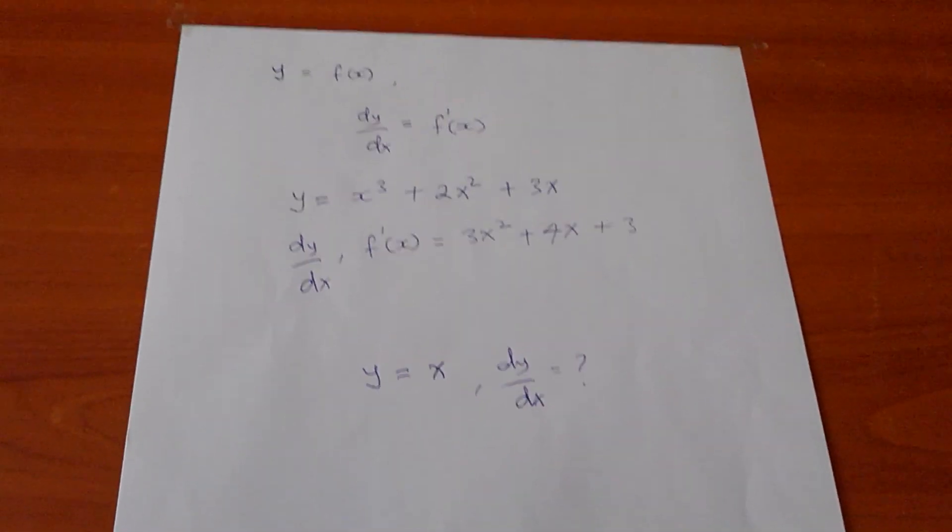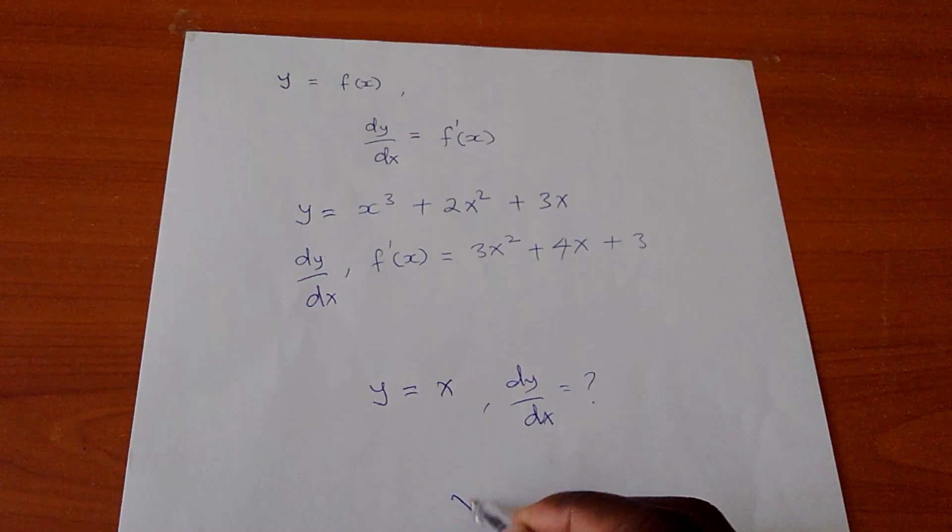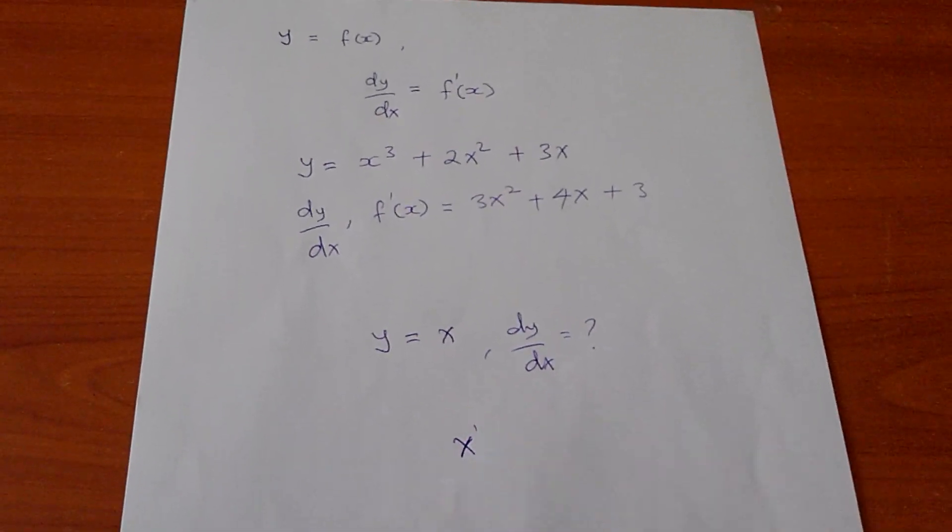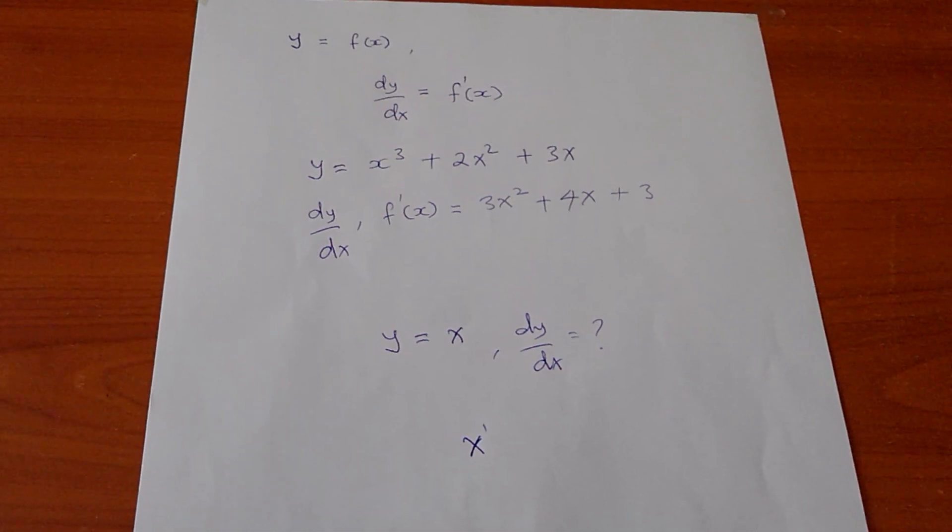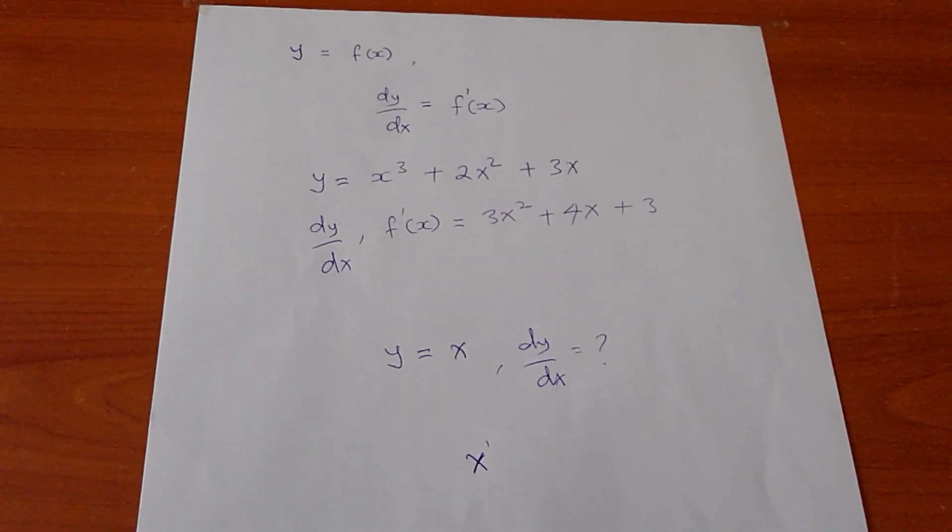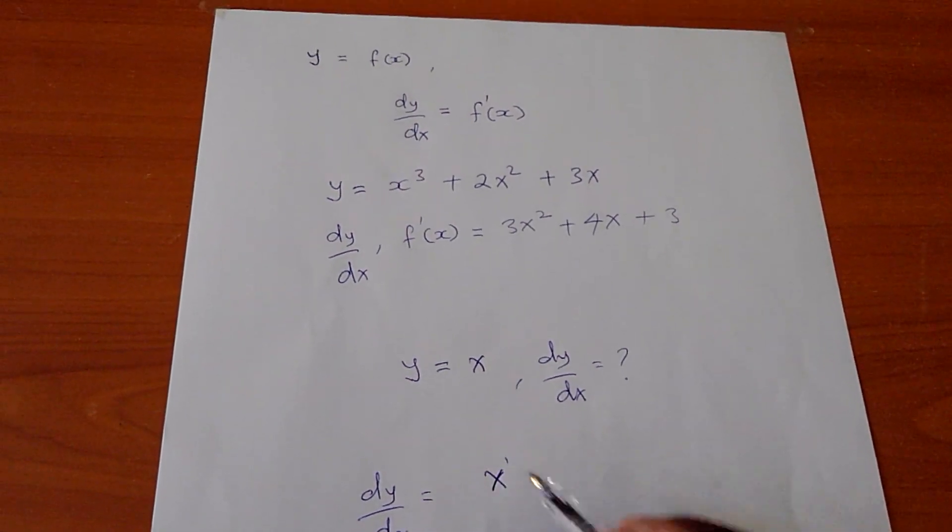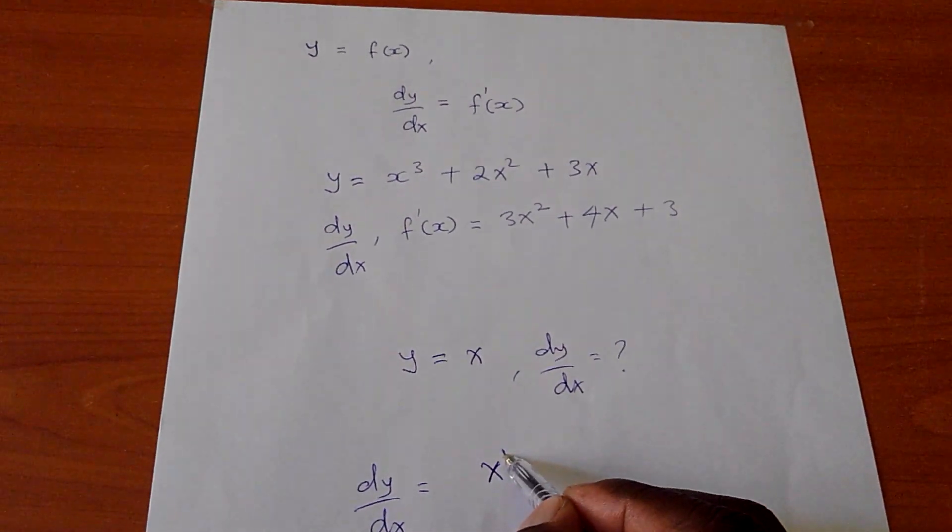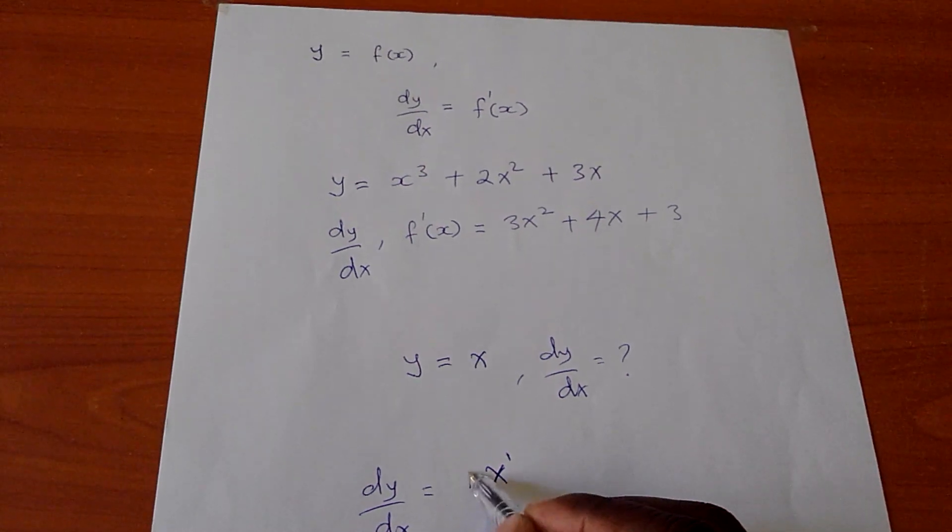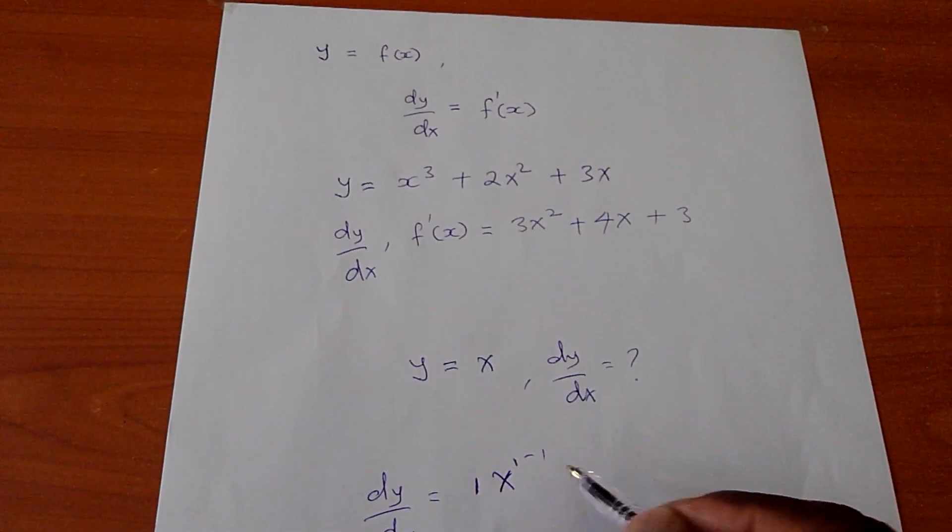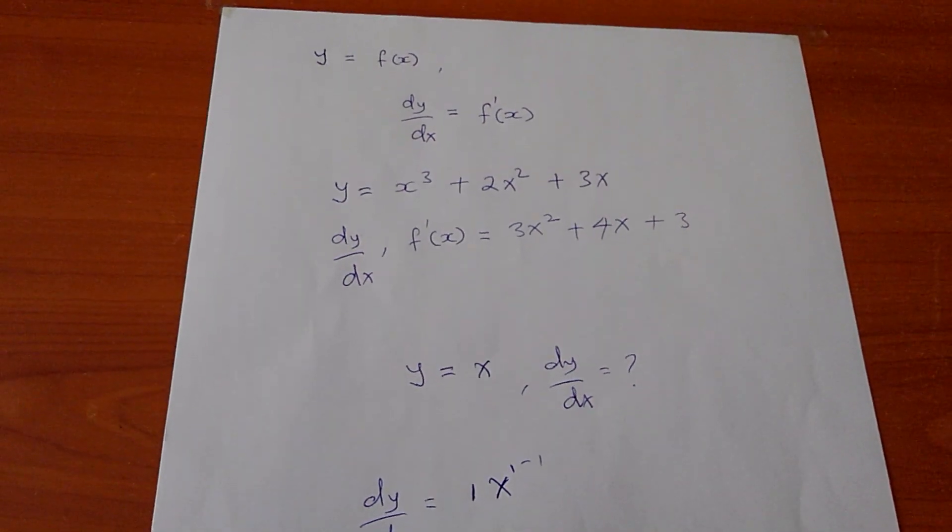Now from here you see x - it has a silent one. You agree? So it has a silent one. If I'm able to get dy/dx, I will say this one which is silent will come and multiply this x, then I will subtract the 1. So I will be having 1 times x to power 0.